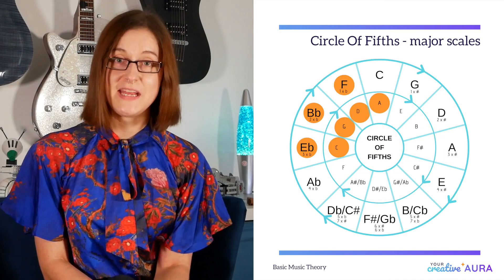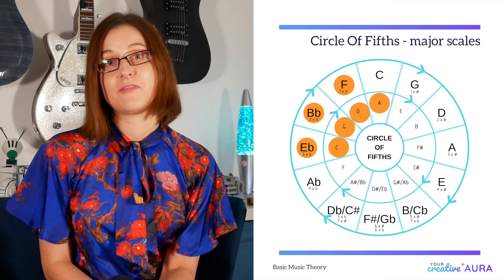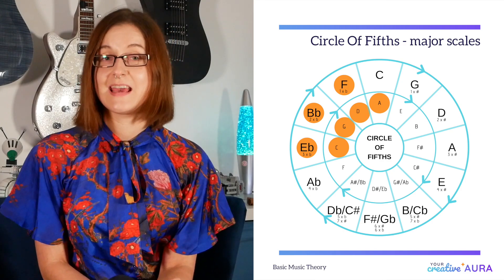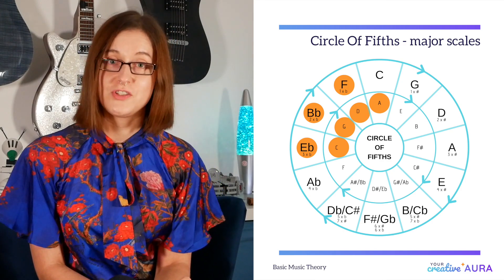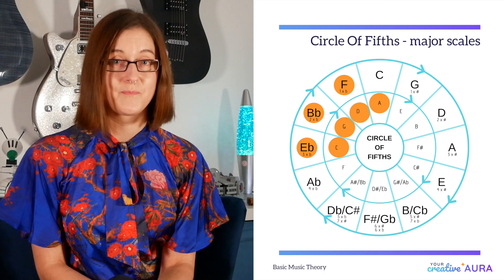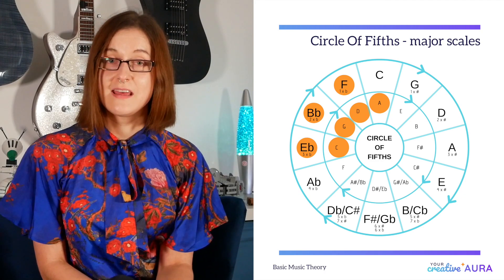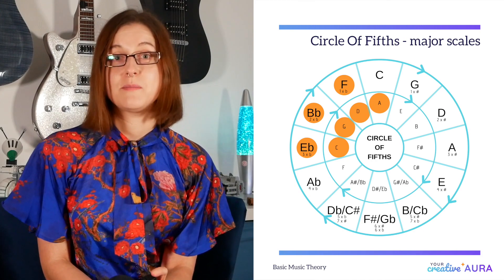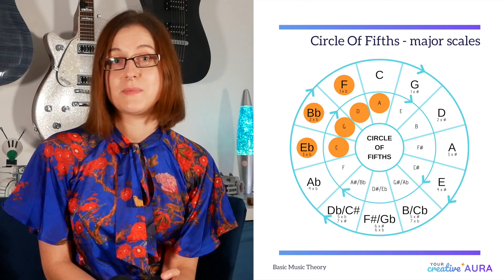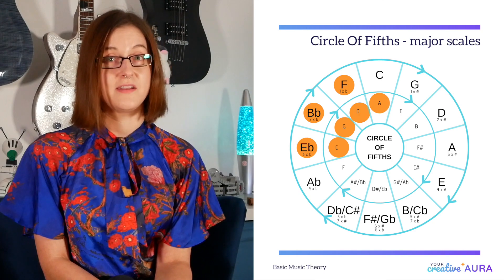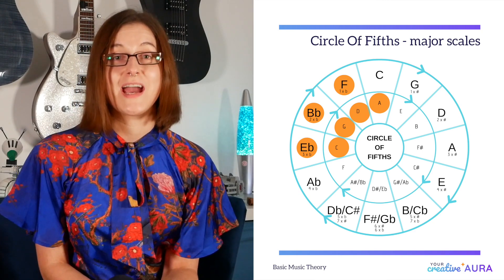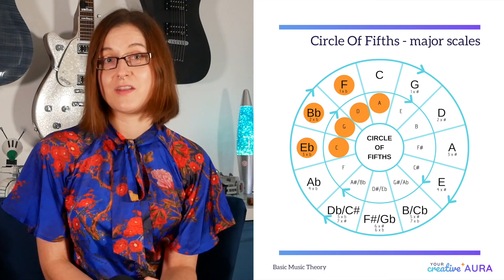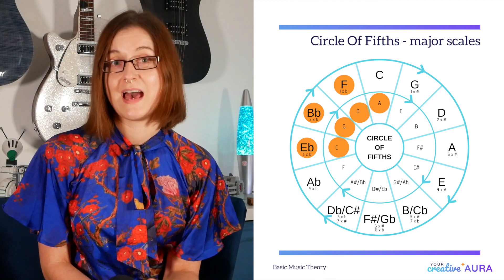So our B flat major scale is B flat, C, D, E flat, F, G and A. And as we can see, the B flat has two times B below it, which means the scale has two flat notes. And from our diagram we can see that these flat notes are B flat and E flat.